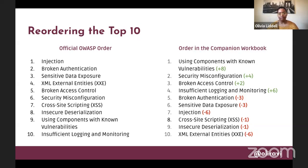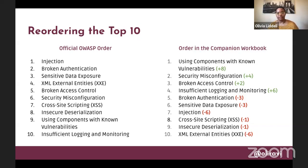In the official OWASP order, 'using components with known vulnerabilities' is item number nine. In the companion workbook, it moved up eight spots and it's number one. I'm not trying to change the order officially, but think about it — if you were trying to explain to someone these different risks, which ones are going to be more easy for them to understand? In the workbook, I took the approach of explaining these not just in terms of secure coding practices, but encouraging learners to think about it in more general terms. Things like saying, 'hey, you're using a program that's known to have some issues with it — don't do that.'